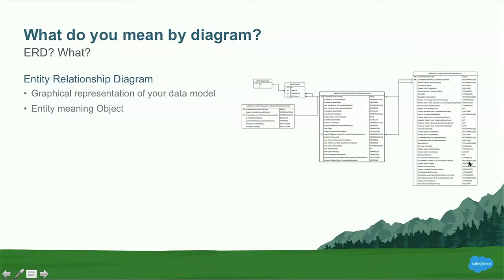So what do I mean by diagram? What I'm talking about here is an entity relationship diagram. An entity relationship diagram is a graphical representation of your Salesforce data model. When I say entity here, I mean Salesforce object. You can see an example of an entity relationship diagram up there on the slide — that's part of the Salesforce files, or Salesforce content, data model. ERDs are a standard way of displaying data models.